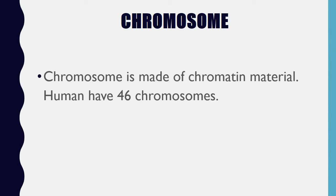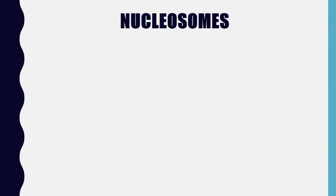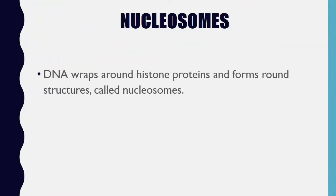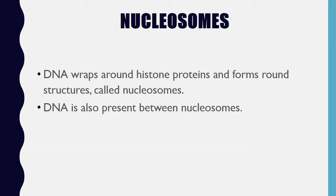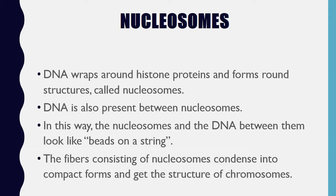Chromosome is made of chromatin material. Humans have 46 chromosomes. Chromatin is a complex material made of DNA and proteins, mainly histone proteins. Nucleosomes: DNA wraps around histone proteins and forms round structures called nucleosomes. DNA is also present between nucleosomes. In this way, the nucleosomes and the DNA between them look like beads on a string. The fibers consisting of nucleosomes condense into compact forms and get the structure of chromosomes.